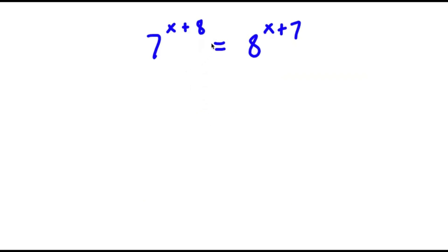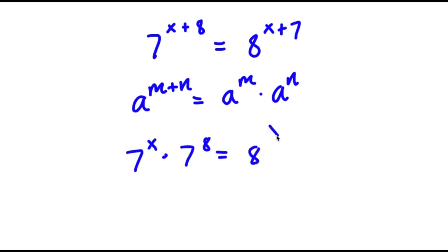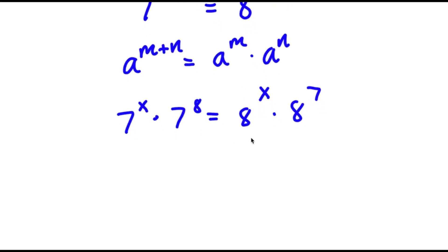In this problem, I have 7 to the power of x plus 8 equals 8 to the power of x plus 7. Using the property that a to the power of m plus n equals a to the power of m times a to the power of n: 7 to the power of x plus 8 becomes 7 to the power of x times 7 to the power of 8, and 8 to the power of x plus 7 becomes 8 to the power of x times 8 to the power of 7.